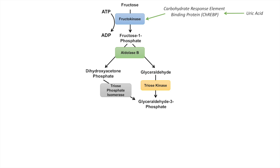Dihydroxyacetone phosphate can also be processed into glyceraldehyde 3-phosphate via the enzyme triose phosphate isomerase. Once we have glyceraldehyde 3-phosphate, it can continue through the rest of the glycolytic pathway to phosphoenolpyruvate, and then be processed into pyruvate by the enzyme pyruvate kinase.